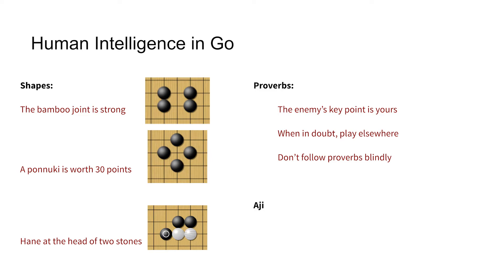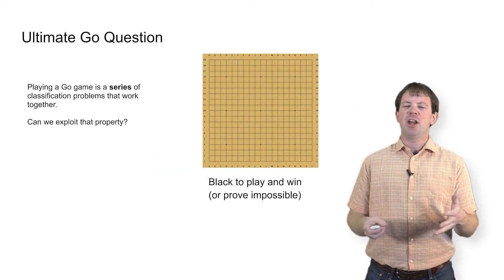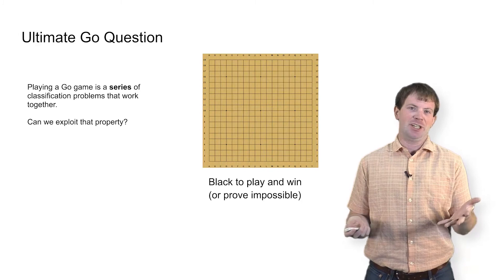Similarly, Go players think about this concept of aji, which loosely translates to risk. A board position might be good in the short term, but it leaves a lot of aji — it leaves yourself open to a lot of risk. So Go is about balancing gaining points now versus making sure your position isn't too weak. These kinds of thoughts are what we need a computer to do if it needs to play Go effectively. We need some kind of supervised learning algorithm that can take these principles and translate them into effective play, but encoding these directly can be very difficult.